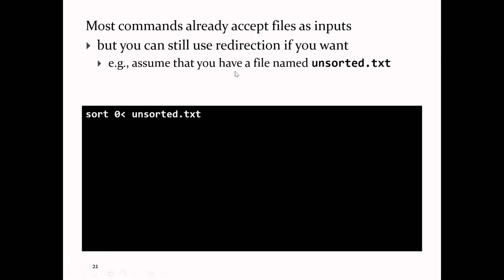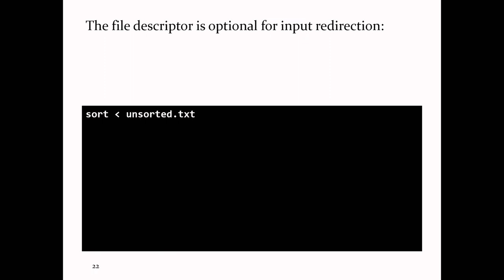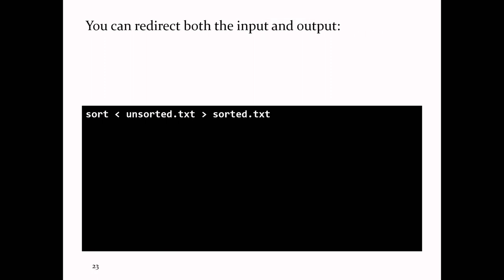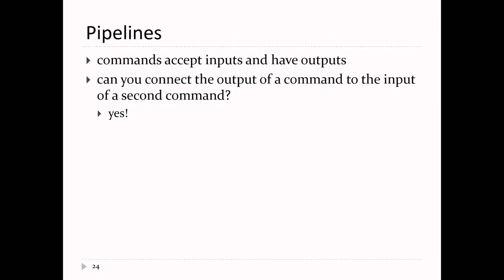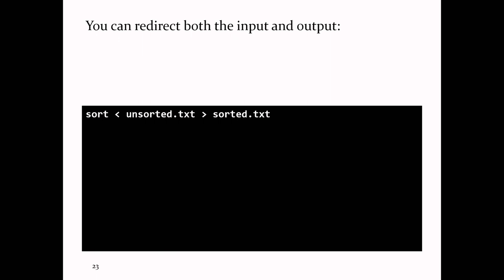Redirecting standard input is a bit unusual because most commands we'll use already let you provide input from a file directly. You can redirect both input and output simultaneously — for example, sorting from a file called 'unsorted' and outputting to 'sorted.txt'. In summary, you can redirect all three streams: take input from a file instead of the keyboard, send normal output to a file, and send error messages to a file.